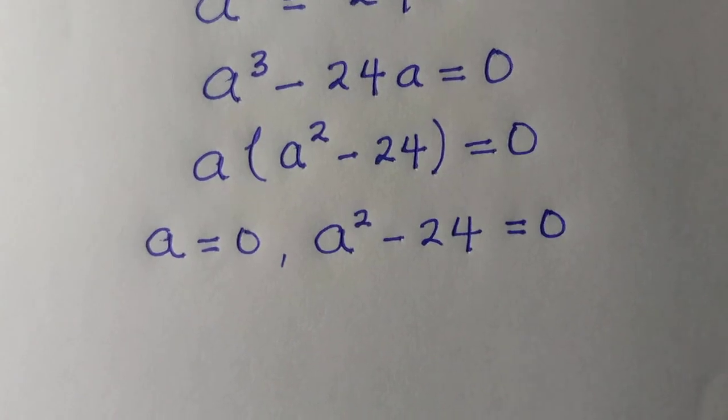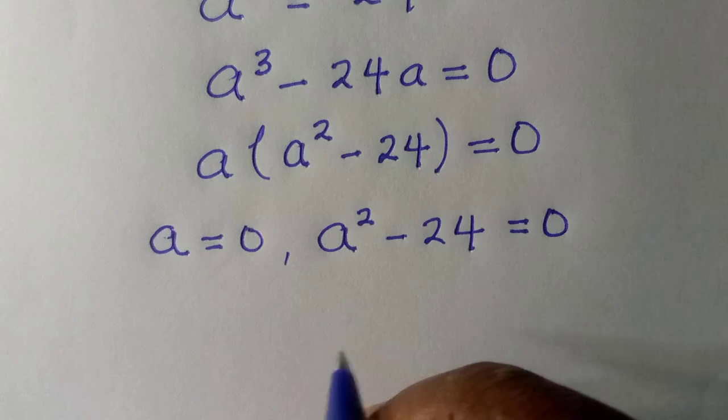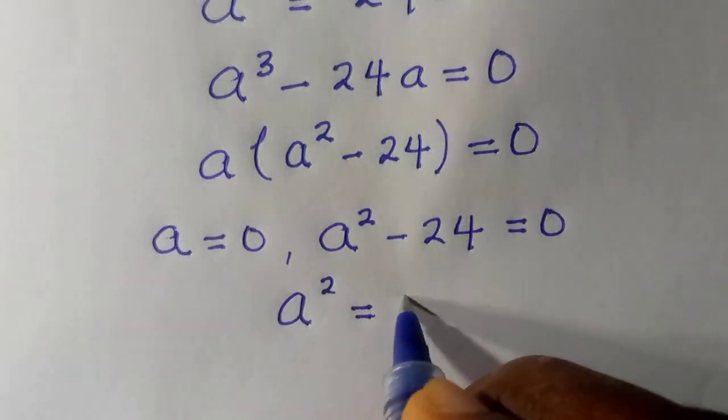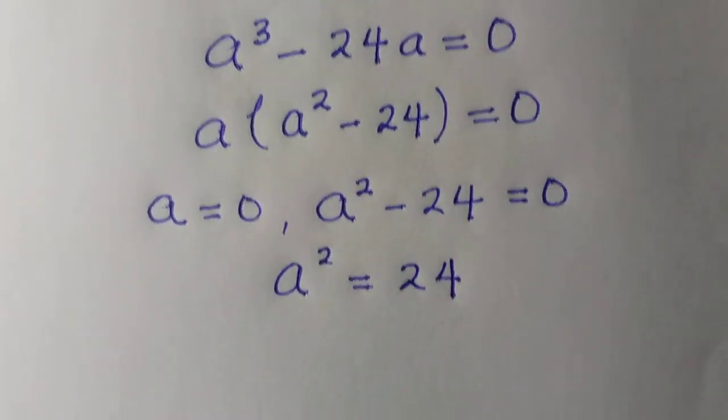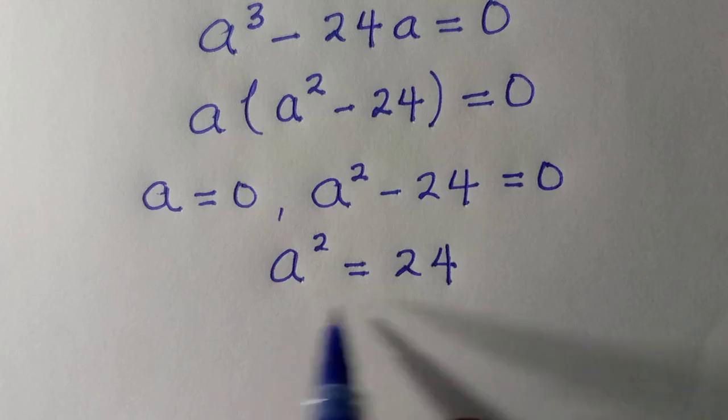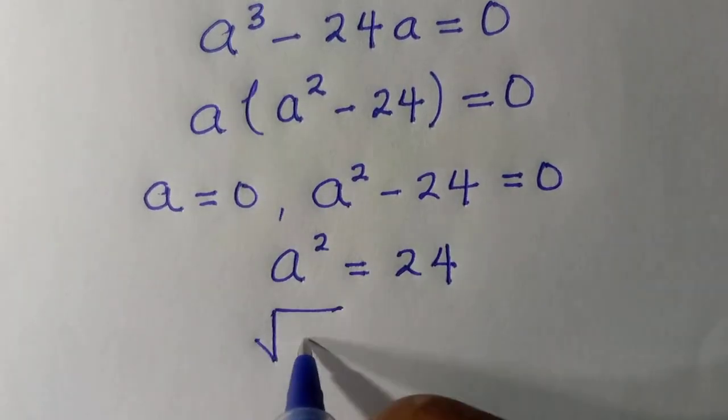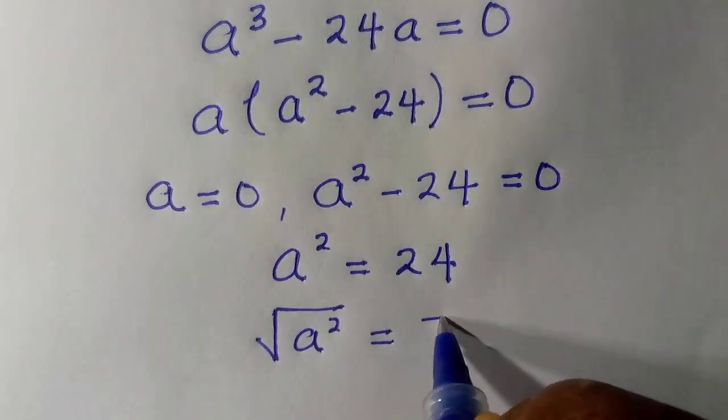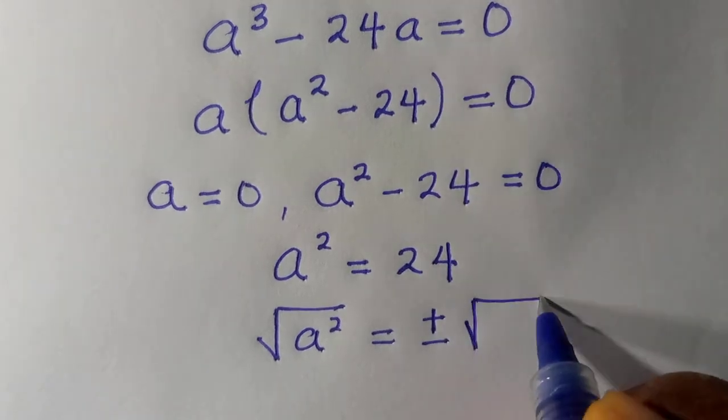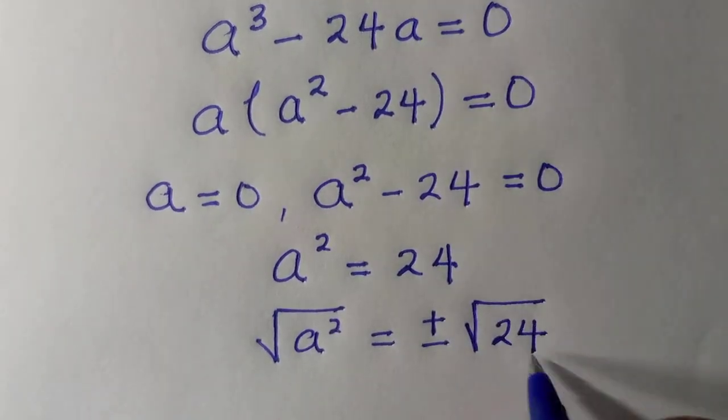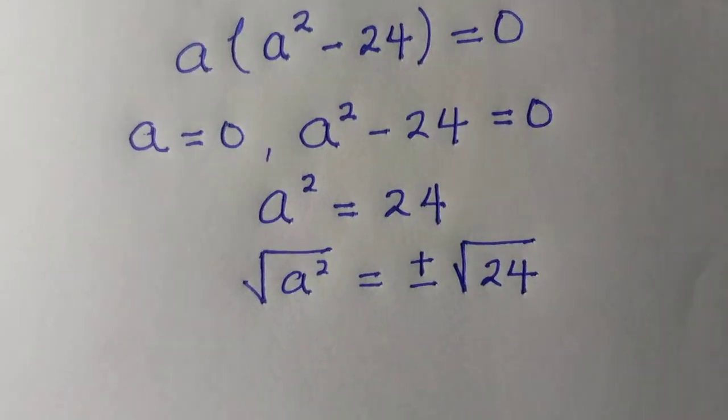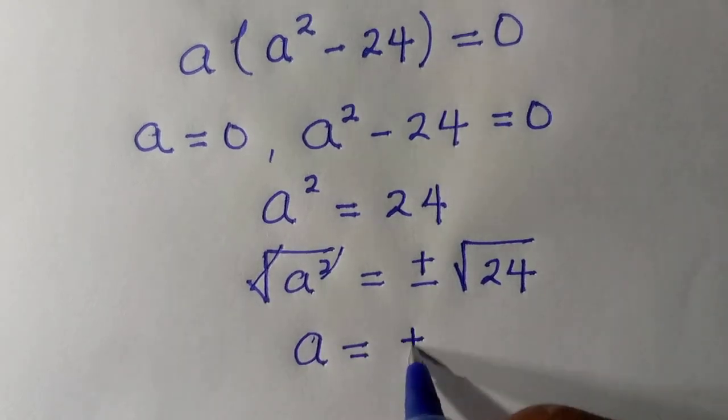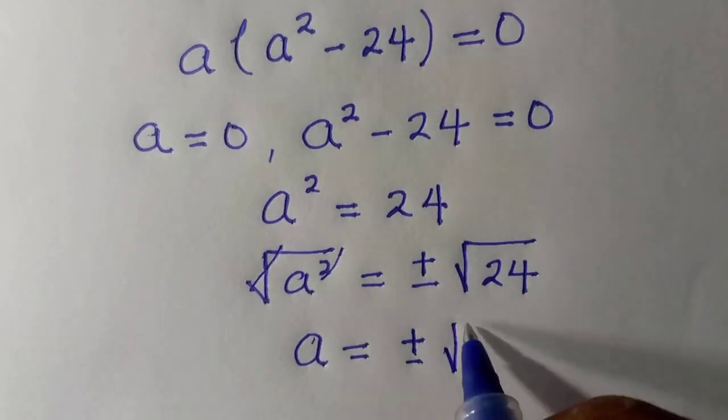We have it as a squared minus 24 equals 0. So to get the value of a here, when we take this one to the other side, we have a squared equals 24. We have to take the square root of both sides, so that we get the value of a only. When we take the square root, we add plus or minus, and here also comes with root 24. So we have a equals plus or minus the root of.